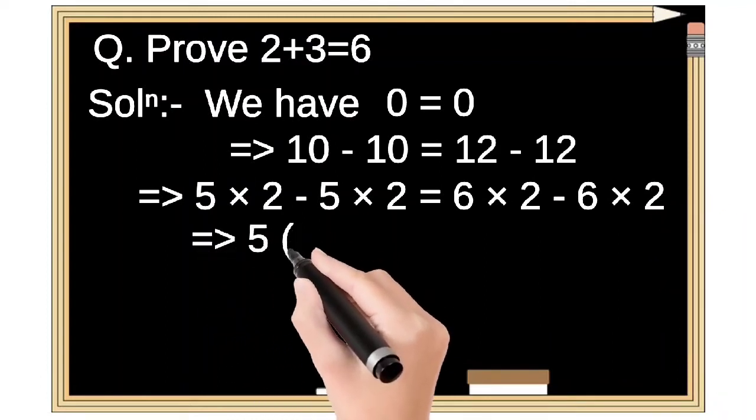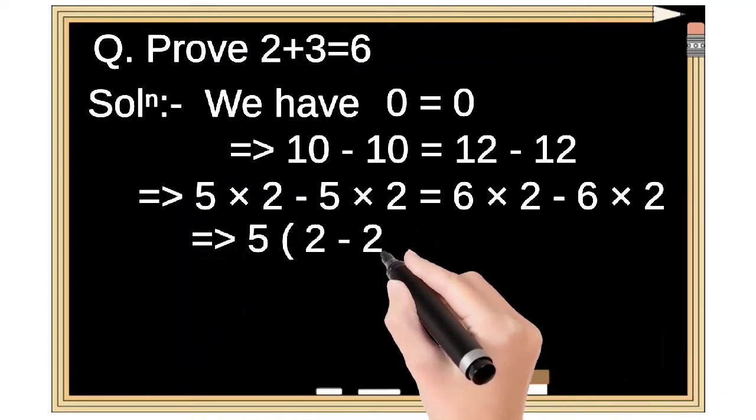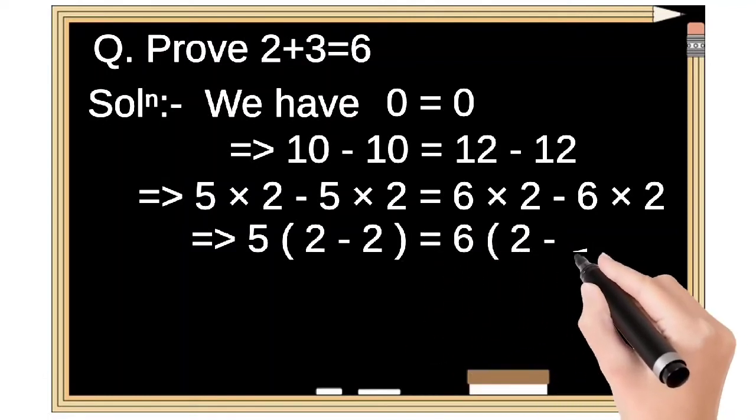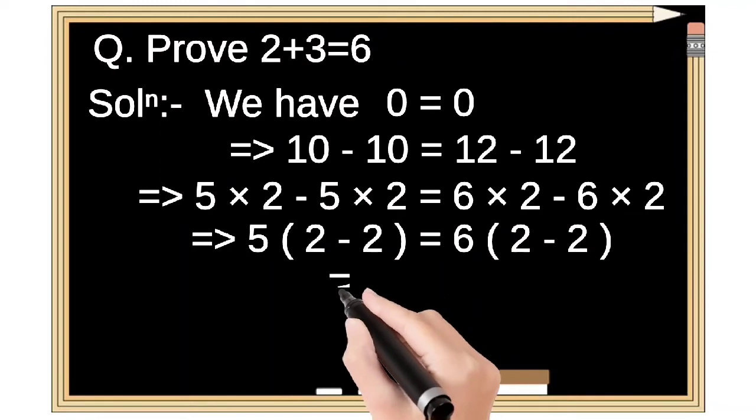Taking common 5 on left hand side, then we get 5 into 2 minus 2. Taking common 6 on right hand side, then we get 6 into 2 minus 2.